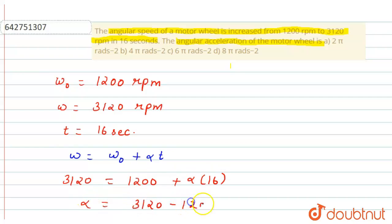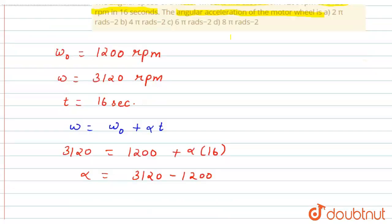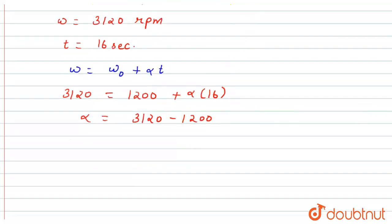3120 minus 1200 divided by 16. So this will be equals to, we can subtract firstly 3120 minus 1200.